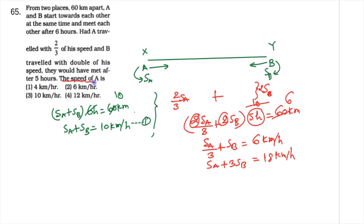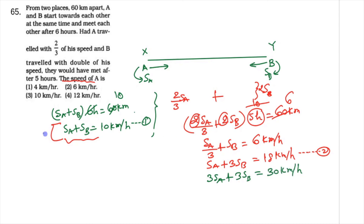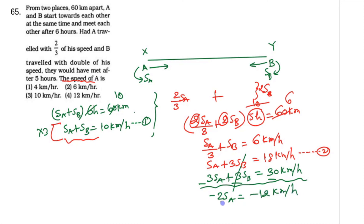The question asks to find the speed of A, so we eliminate B. Multiply equation one by three: thrice Sa plus thrice Sb equals 30 km per hour. Now subtract equation two from this. The thrice Sb terms cancel, giving minus twice Sa equals minus 12 km per hour. So Sa equals 6 km per hour. Our answer is option number B.